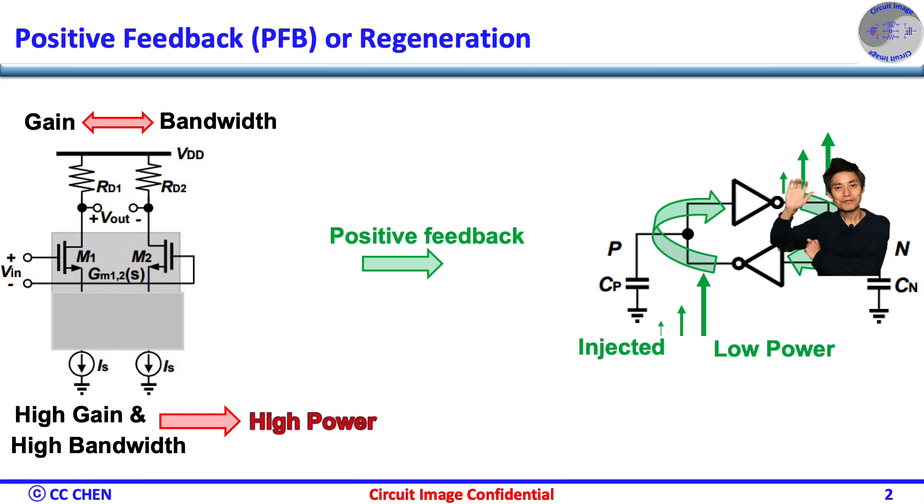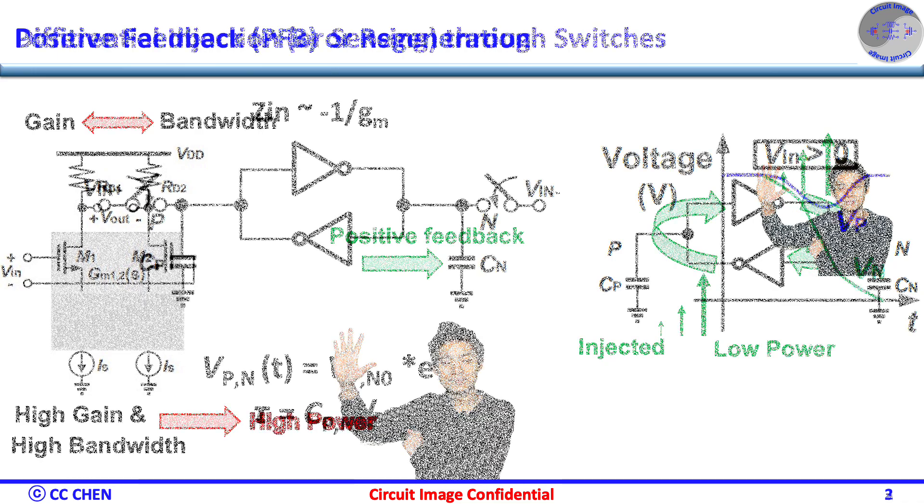then the regeneration will pull one output node to the supply rail and the other node to the ground rail. Think about the switching for 5 seconds. Right.